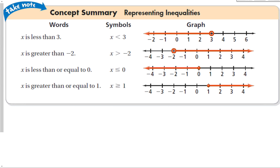To review: we can represent inequalities with words, with symbols, and with a graph. For example, x < 3 has an open circle going to the left; x > -2 has an open circle going to the right; x ≤ 0 has a solid circle going to the left; and x ≥ 1 has a solid circle going to the right.